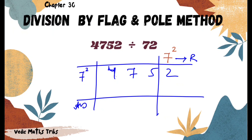We divide 4 by 7 — 4 is smaller, so we take two digits: 47. It goes 6 times (7×6=42), giving remainder 5. We write 5 alongside the next digit, making 55. We multiply 6 by the flag 2: 6×2=12, and subtract 12 from 55, giving 43 as the next divisor.